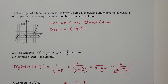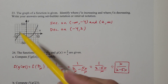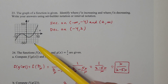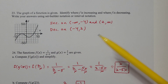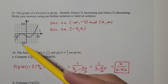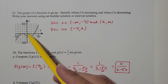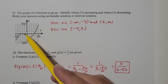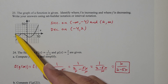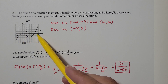Problem 23 is next. The graph of f is given — identify where f is increasing and where f is decreasing. We're using an increment of 2 on the x-axis: -2, -4, -6, -8, -10, and 2, 4, 6, 8, 10.